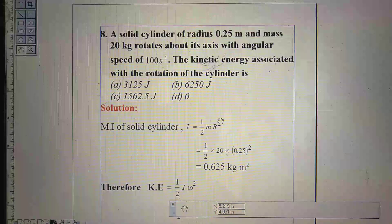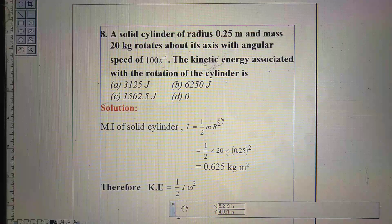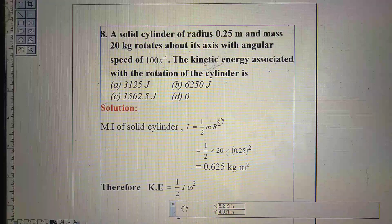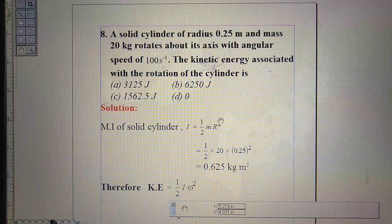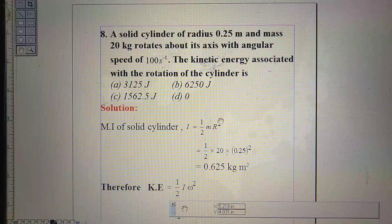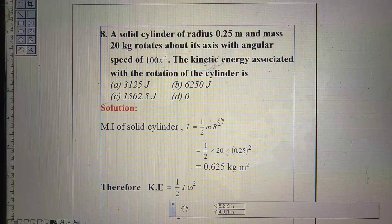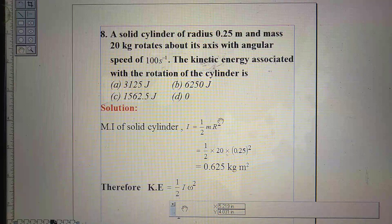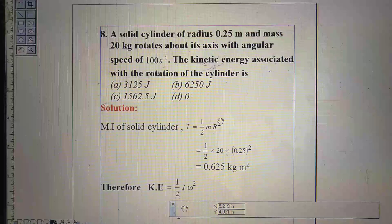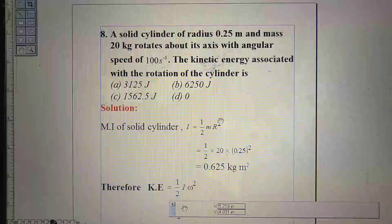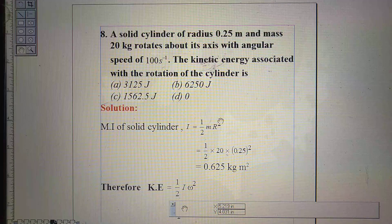Third question: a solid cylinder of radius 0.25 meter and mass 20 kg rotates about its axis with angular speed of 100 per second. The kinetic energy associated with the rotation of the cylinder is option A, 3,125 joule, B, 6,250 joule, C, 1,562.5 joule, option D, 0.